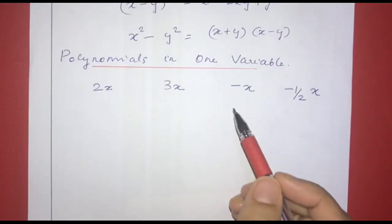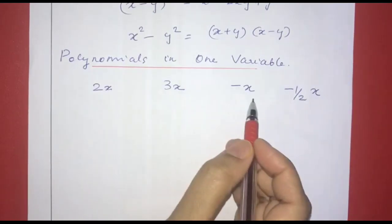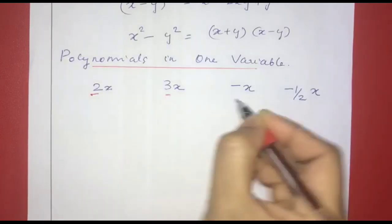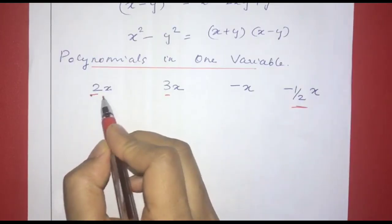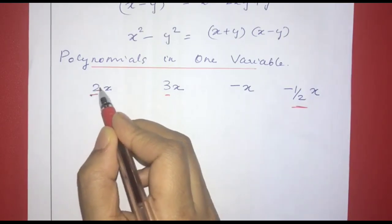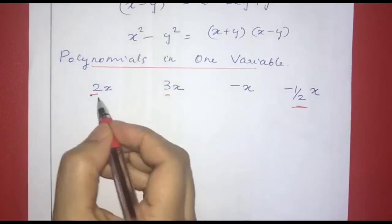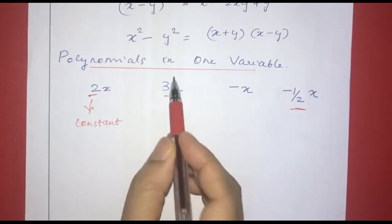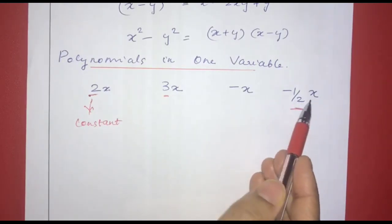Next, we learn about polynomials. These are algebraic expressions: 2x, 3x, minus x, minus 1 by 2x. In these expressions, we call numbers as constants. If it is a constant in 3x, it is 3. If it is a constant in x, it is 1. If it is a constant in 1 by 2x, it is 1 by 2.